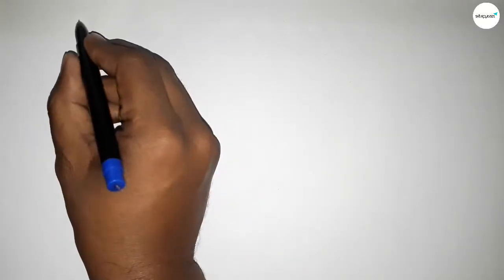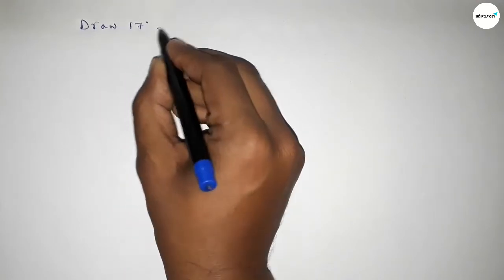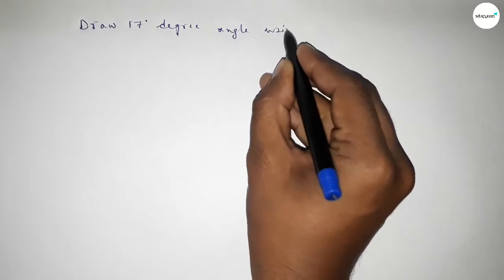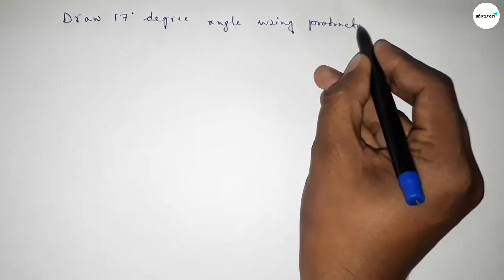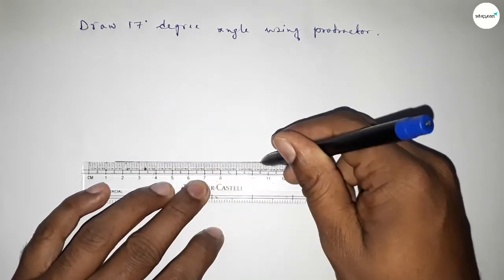Hi everyone, welcome to SSR Classes. Today in this video we have to draw a 17 degree angle by using a protractor. So constructing 17 degrees. Now let's start the video. First of all, we have to draw here a line of any length.